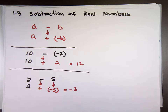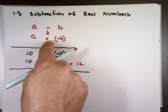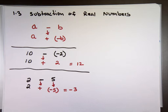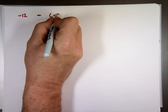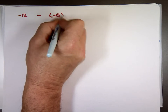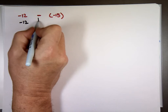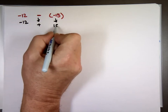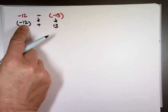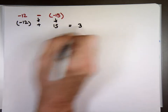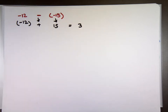The key is that step right there: change the subtraction to addition and apply the same rules. You try this one: negative 12 minus negative 15. This is going to be negative 12 — change this to addition, change this to positive 15. Different signs: subtract 12 from 15, which is 3. And what's the larger? Positive. Good.